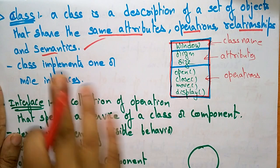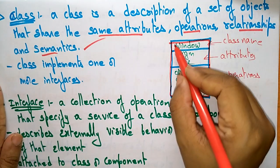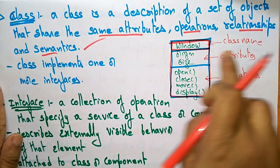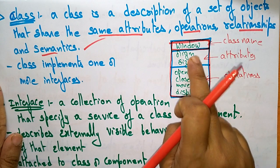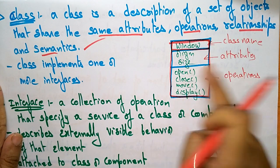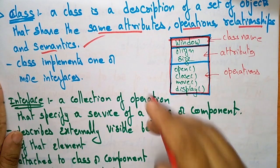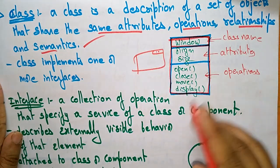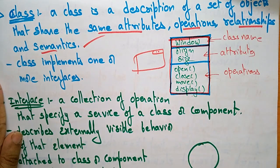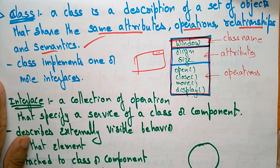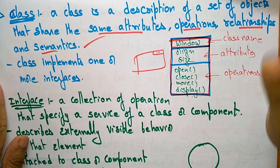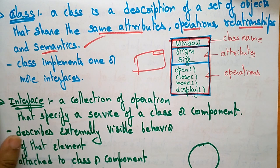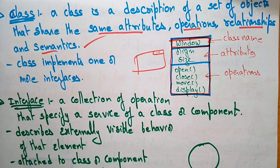A class implements one or more interfaces. Here the first box indicates the class name — 'Window' is the class name. Origin and size are the attributes. Open, close, move, and display are the operations performing on the class. This is the representation of a class — a description of a set of objects that share the same attributes, operations, relationships, and semantics.